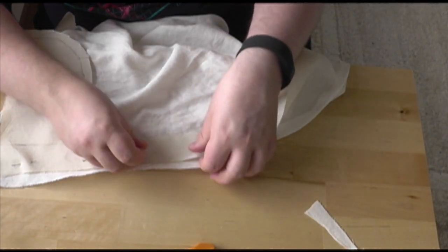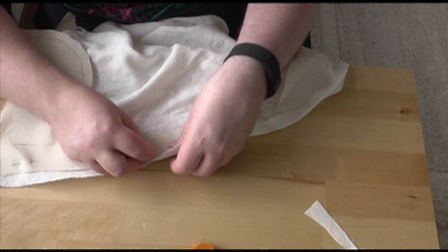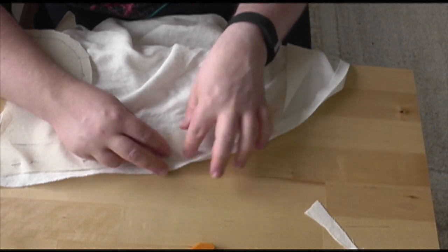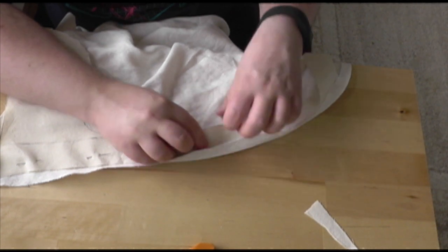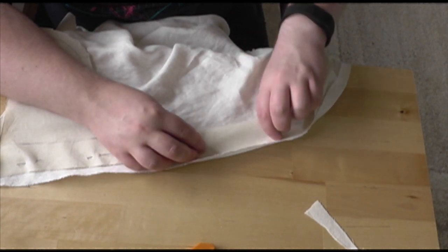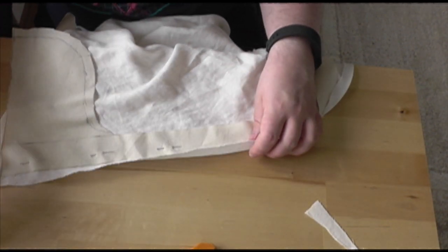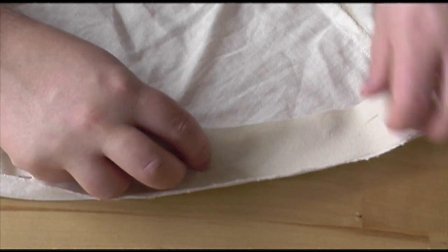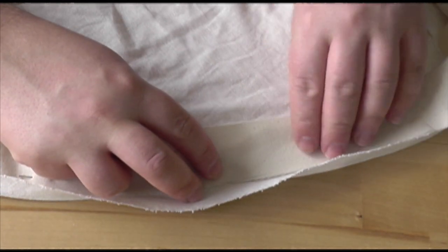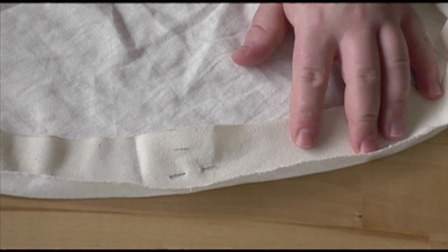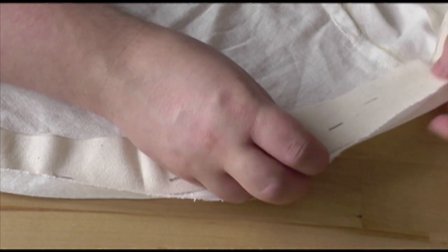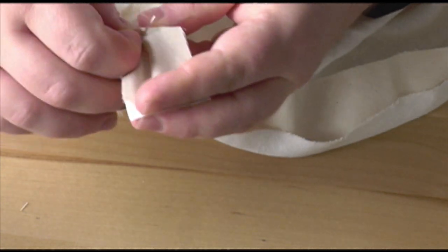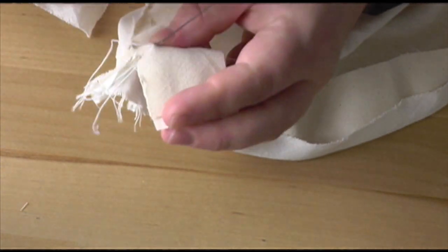With that patterned and cut out, I could pin it into the waistband, following the line of the seam allowance, and then pin, sew, trim, and press the back seam.